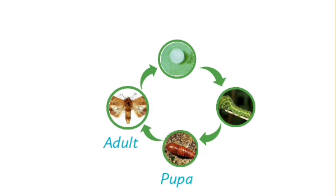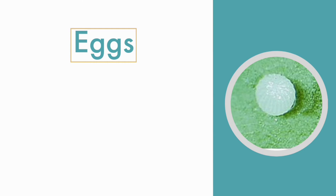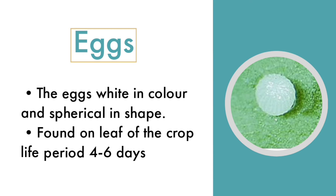It has a four-stage life cycle: egg, larva, pupa, and adult. The egg color is white and spherical in shape. It is found on the leaves of the plant and the life period of the egg is four to six days.